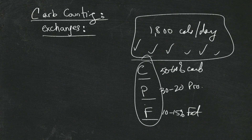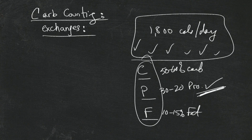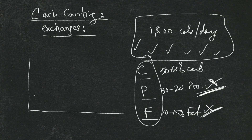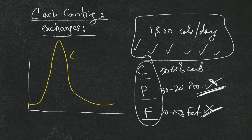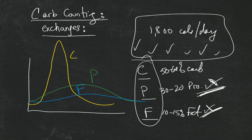What carb counting in diabetes today says is that we don't really have to consider insulin for protein, and we don't really have to consider insulin dosing for fat. If you look at the impact of each food type on blood sugar: carbohydrate makes your blood sugar go up significantly, protein makes it go up slightly, and fat really doesn't do anything to your blood sugar — except maybe slow down the rate of absorption of protein and carbohydrates.